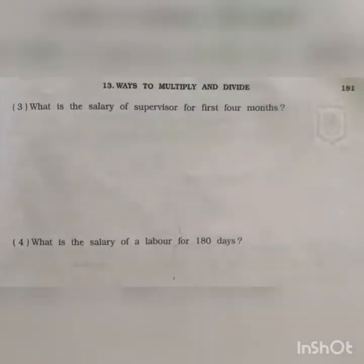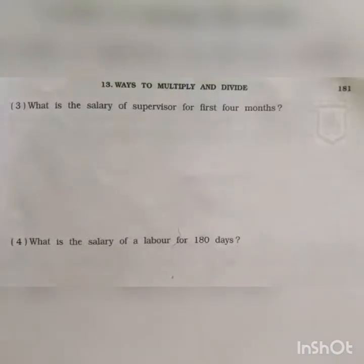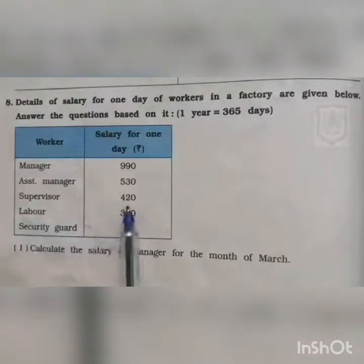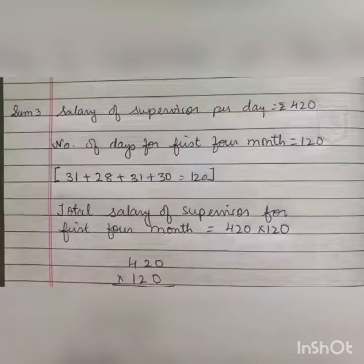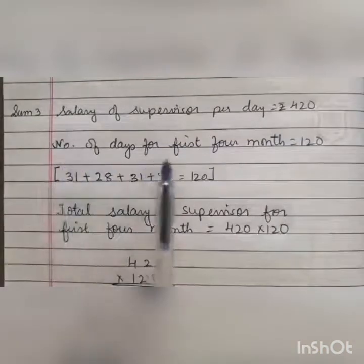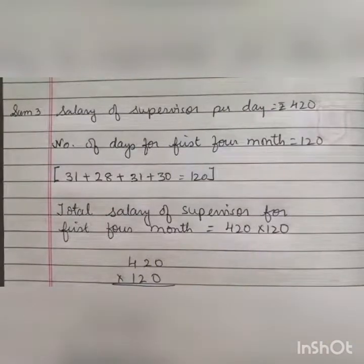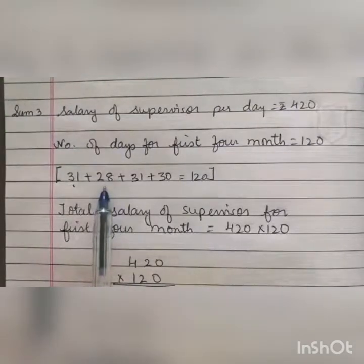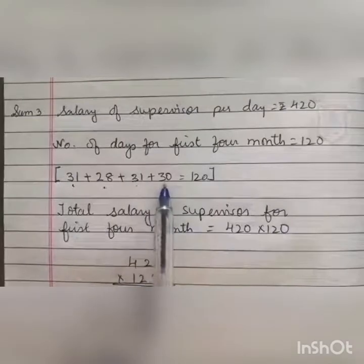Question number 2 you will do on your own. Now we move on to question number 3: what is the salary of the supervisor for the first 4 months? The salary for 1 day of the supervisor is 420 rupees. Solution for question number 3: the salary of the supervisor per day is rupees 420. The number of days for the first 4 months — January has 31 days, February has 28 days, March has 31 days, and April has 30 days — totaling 120 days.